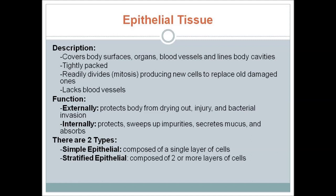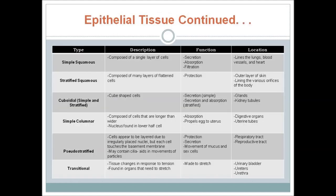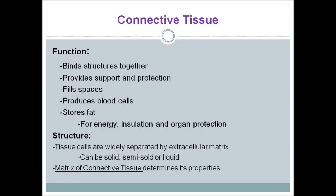Internally, epithelial tissue protects, sweeps up impurities, secretes mucus, and absorbs. There are two types of epithelial tissues: simple epithelial, composed of a single layer of cells, and stratified epithelial, composed of two or more layers of cells. More specifically, there are six different types of epithelial tissue shown in a chart, each with their own description, function, and location. Please pause the video to look over the chart.